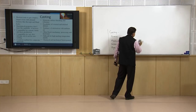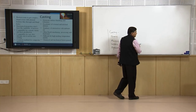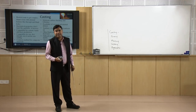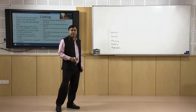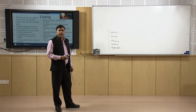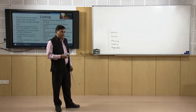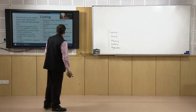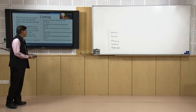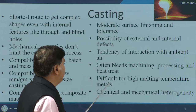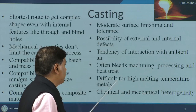Now coming to the limitations of the casting process: it is necessary that the material is brought to the molten state, so melting of the material is mandatory. For that purpose it is necessary that the melting point of the material is reasonably low — if it is too high, it makes melting difficult, and that is why high melting point materials are difficult to process by casting.